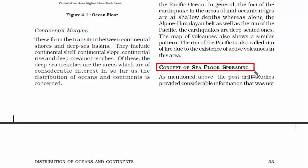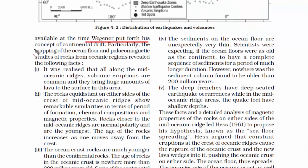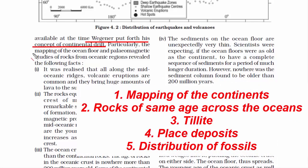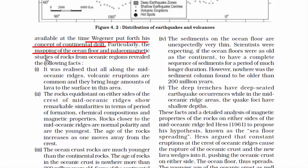Now we come to the concept of sea floor spreading, where things get really interesting. Wegener's theory focused on continental evidence — fossils of animals on various continents, and how the South American East Coast looked like a missing puzzle piece when joined with the African West Coast. The post-drift studies gave valid arguments against Wegener's continental drift theory; especially ocean floor mapping and testing of oceanic rocks were crucial steps that revealed real facts giving post-drift study more weight than Wegener's theory.